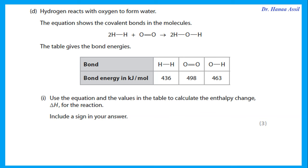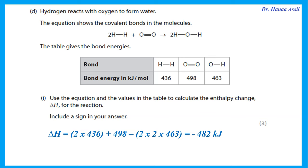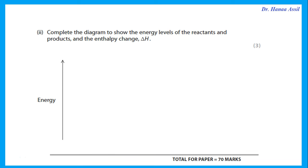Hydrogen reacts with oxygen to form water. Use bond energies to calculate the enthalpy change. ΔH = energy of bonds broken (reactants) − energy of bonds formed (products). Reactants: 2 × H-H bond (2 × 436) plus one O=O bond (498). Products: 4 × O-H bonds (4 × the given O-H value). The result comes out negative, so ΔH = −482 kJ/mol (exothermic). Always include the sign.